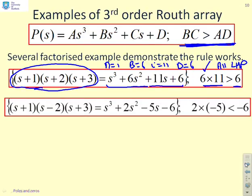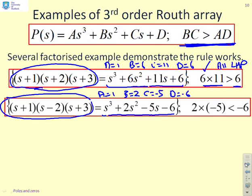Here's the second example. You'll notice I've deliberately inserted a right half-plane root, the s minus 2. When I multiply that out, I get s cubed plus 2s squared minus 5s minus 6. Let's write out the coefficients. A equals 1, B equals 2, C equals minus 5, D equals minus 6. Now plug those into our formula. BC is 2 times minus 5, which is minus 10, and that's clearly less than minus 6. So we haven't satisfied our criteria at the top. BC is not greater than AD, so you must have a right half-plane root, which we knew because we set it up that way. But we're demonstrating that this Routh criteria works.